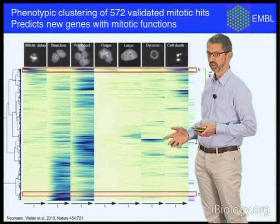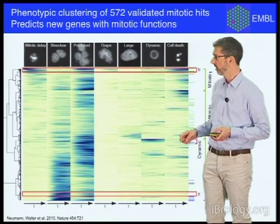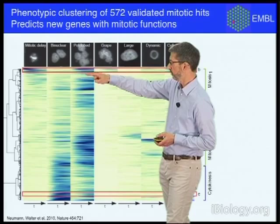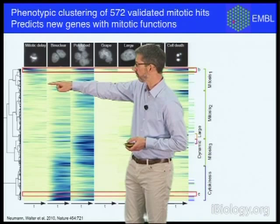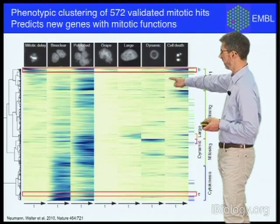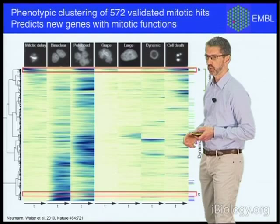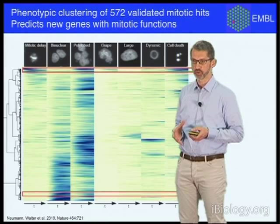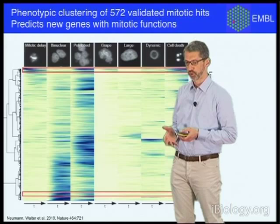Let's zoom in on one of these clusters — the first one boxed in red — where at the beginning of the movie we have a mitotic arrest phenotype, followed by a polylobed phenotype indicative of aberrant chromosome segregation, and at the end of the movie the cells are dying. This cluster contained genes already known to play a role in the assembly of the mitotic spindle, the central structure made up of microtubules that segregates the genome. So this prediction for the new genes we found needs to be validated.